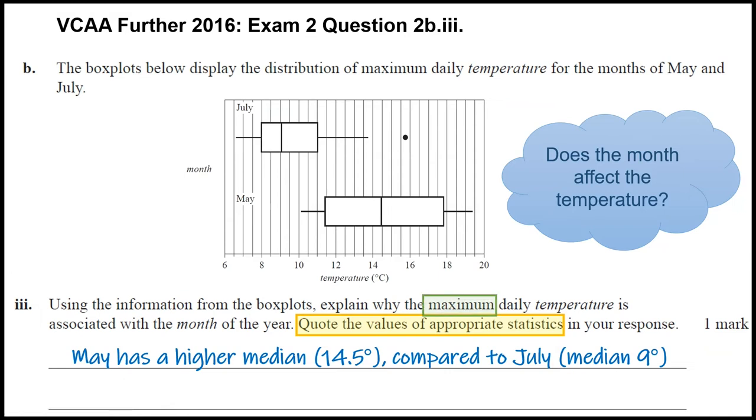I think the confusion with this question came from perhaps that word 'maximum.' Some students were thinking, well, do we need to interpret the maximum of the box plot? But if we read carefully, this box plot is actually just talking about maximum daily temperature. So generally on the weather forecast when we predict the temperature, they'll predict the daily maximum—these are all maximum temperatures. If we want to show that May was hotter than July, we need to talk about this distribution overall, so it's best to quote the measure of center, which is the median. It's the median maximum daily temperature in May which is higher than the median maximum daily temperature in July.